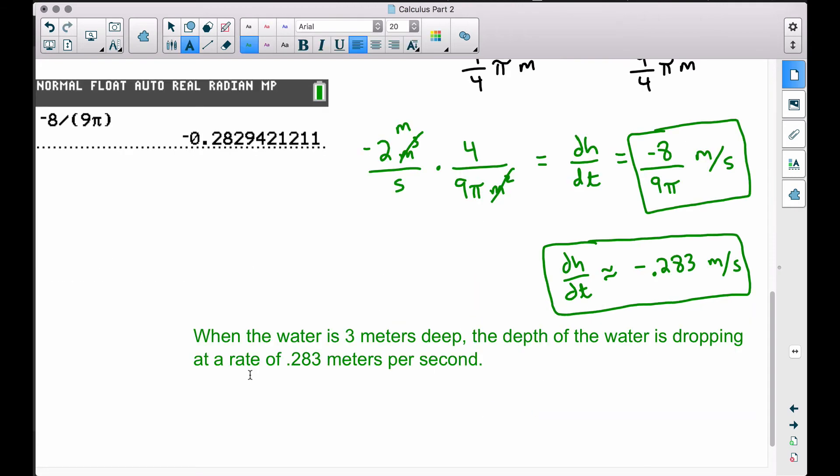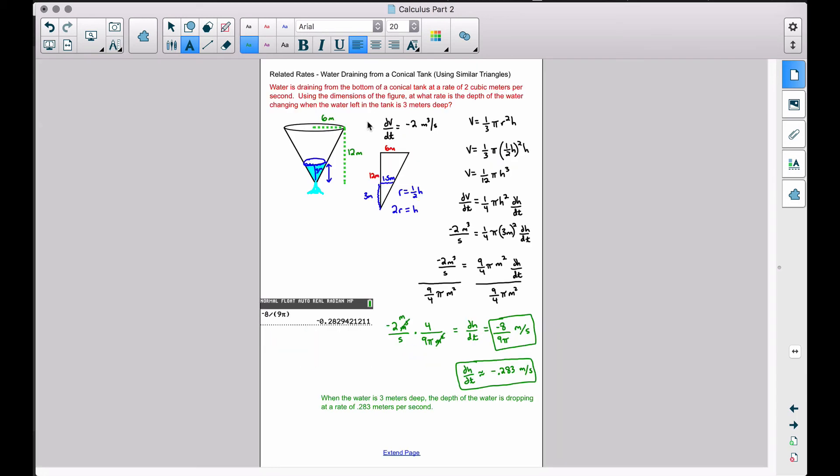I should also mention here too, if you wrote a sentence out, if we use the word dropping since we have the negative, when the water's three meters deep, the depth of the water is dropping at a rate of 0.283 meters per second. Notice I did not use a negative here because the word dropping takes care of that sign. And there you have it, a related rates problem dealing with water that's drained from a conical tank. Very common problem here to use similar triangles, and ultimately at the very beginning, we wanted to get two variables here. We wanted to get one of them in terms of the other. Be careful and make sure you pick the right one depending on the question that you're being asked.